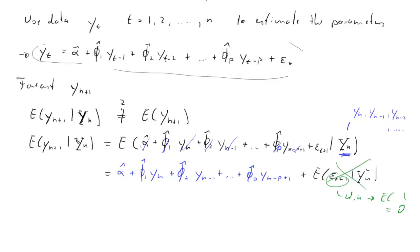All we are left with is alpha-hat plus the phi-hat coefficients times the known Y values. We have the estimated parameters because we used the data up to N, and at time N we have all these observations, so it just comes down to plugging in numbers — and that's actually done in an exercise.